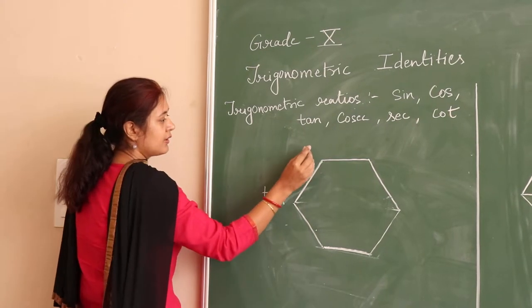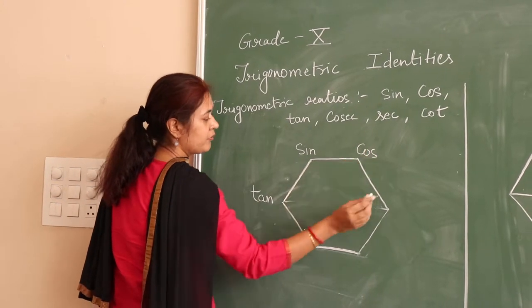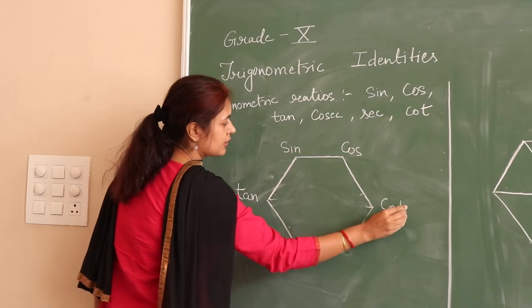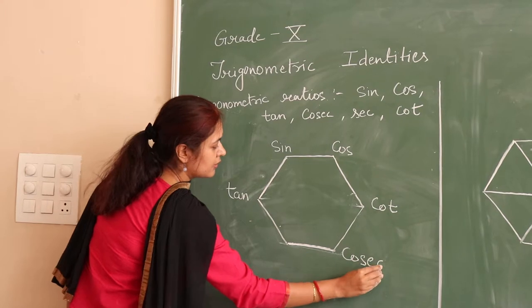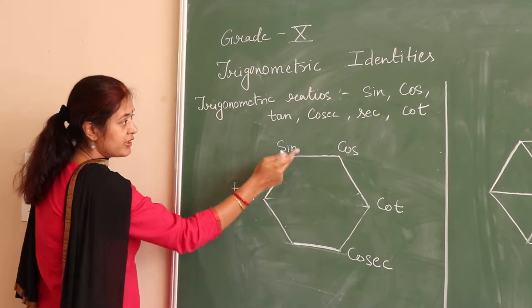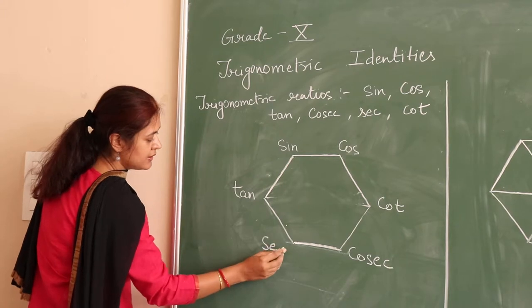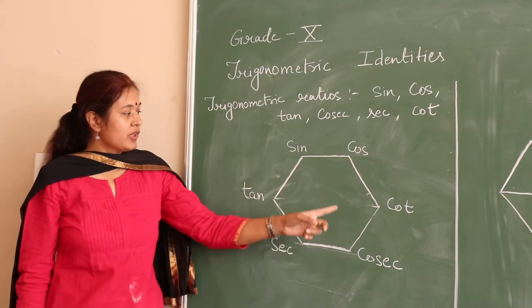Then sin here, cos here, and opposite to tan we write cot. Cosec here, and whatever is left, that is sec, so sec will be written here on this vertex. So as we know there are six vertices.